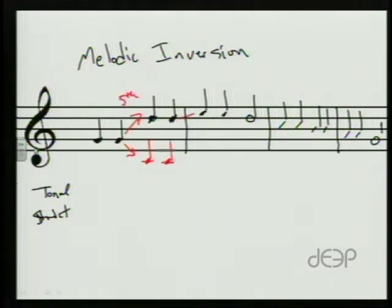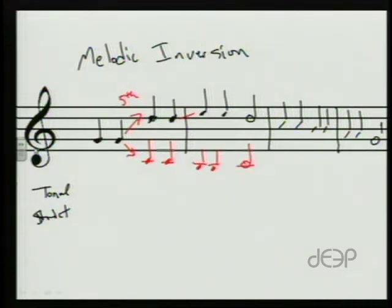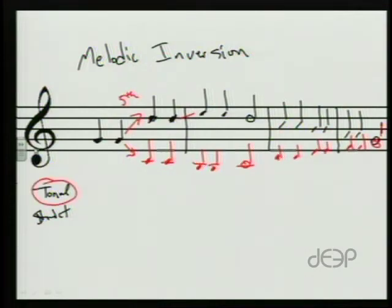Now here we go up a second. So instead of going up a second from here, we're going to go down a second, so we're going to have two Bs. Then it goes down a second, so we're going to go back up a second to the C. Then we keep going down by seconds here, so we're going to go up a second, up a second, up a second. And lo and behold, we're going to end at the same note — we're going to end on the tonic note again. This would be what we know as a tonal melodic inversion.